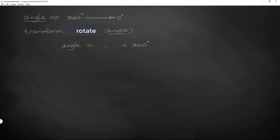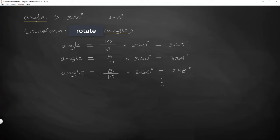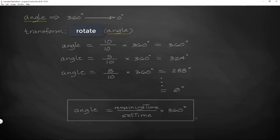This is where we incorporate our timer. We set our timer to some time, for example 10 seconds, and it counts down from 10. So 10 divided by 10 is 1, then 9 divided by 10 is 0.9, then 8 divided by 10 is 0.8, and so on. Let's call the denominator set time and the numerator remaining time. So: angle equals remaining time divided by set time times 360 degrees. As the timer counts down, this angle decreases.